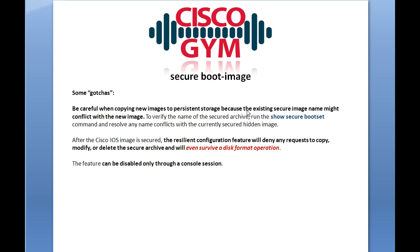Be careful when copying new images to persistent storage, because the existing secure image name might conflict with the new image. With the secured image being invisible, you can have an engineer who doesn't see an IOS image, tries to TFTP or FTP an image to flash, and it fails because you can't copy, modify, or delete it. He's confused because he doesn't see the image and can't upgrade or add a new one — until you disable the secure boot image command. Cisco helpfully says to do show secure boot set, but if you're unaware of this command, you'd never think to run it.